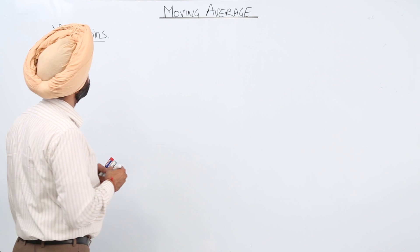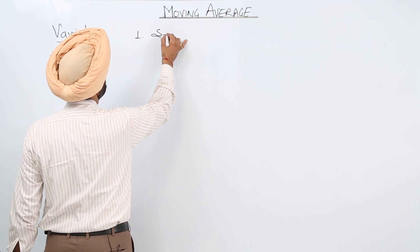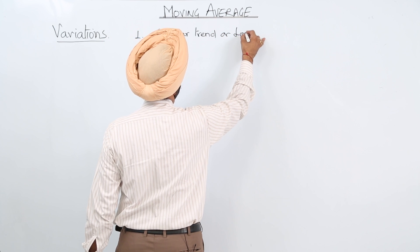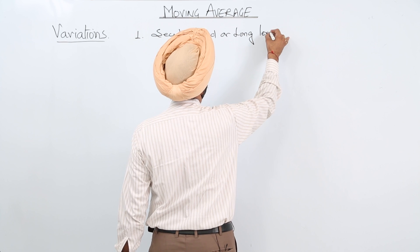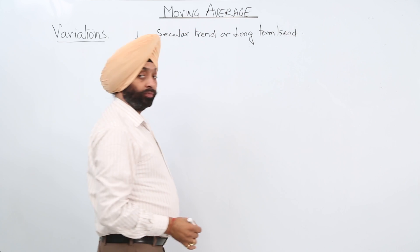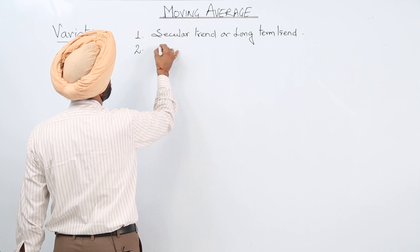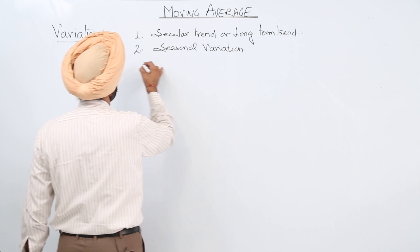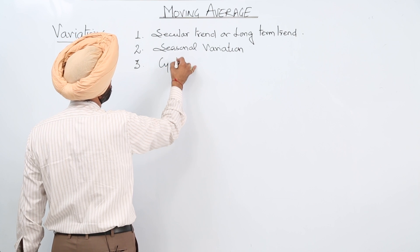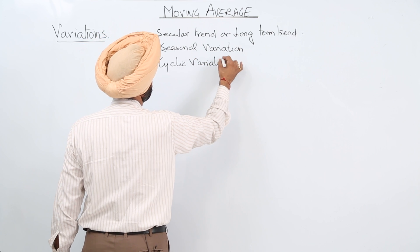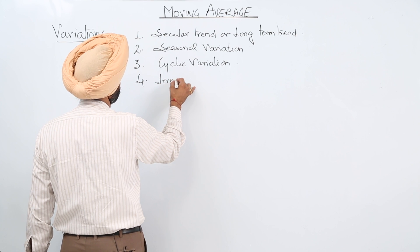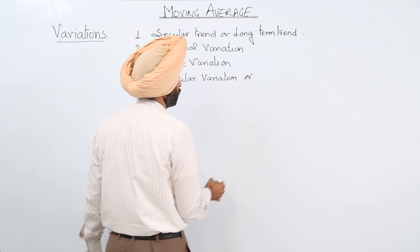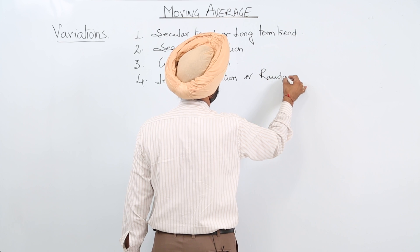So let me write first all the three or four types. Number one we can have that is secular trend or called long term trend. Number two, that is seasonal variation. Number three, cyclic variation. Number four, we are having irregular variation or random fluctuation.